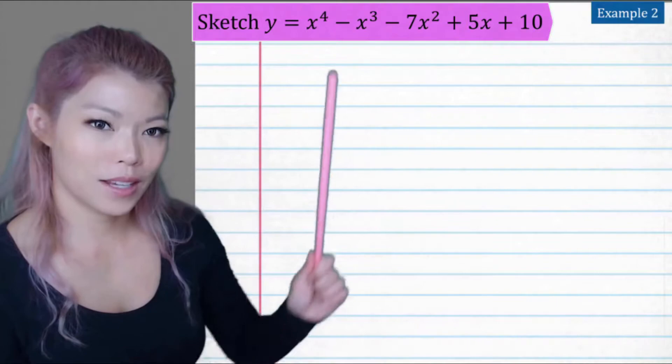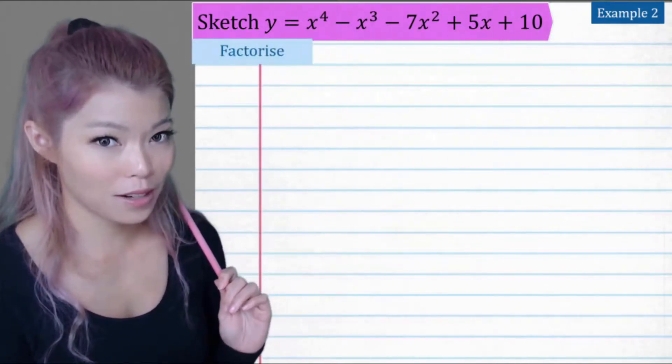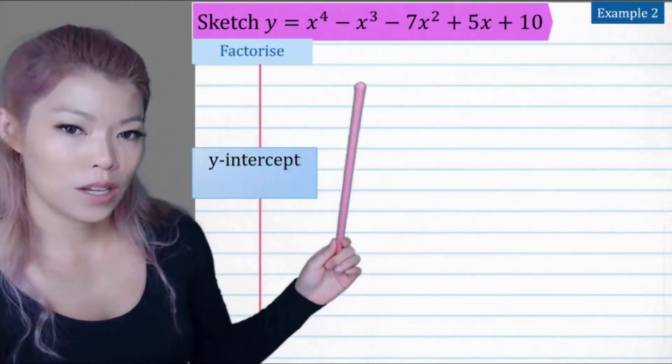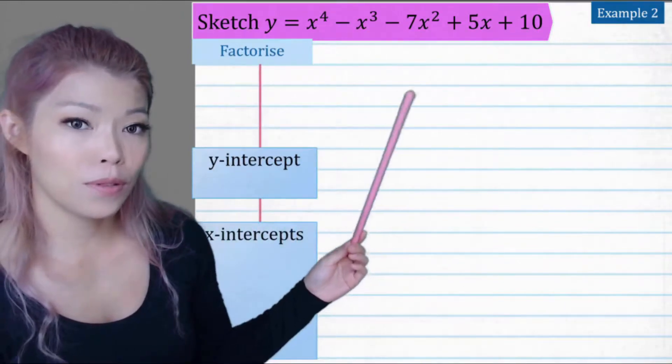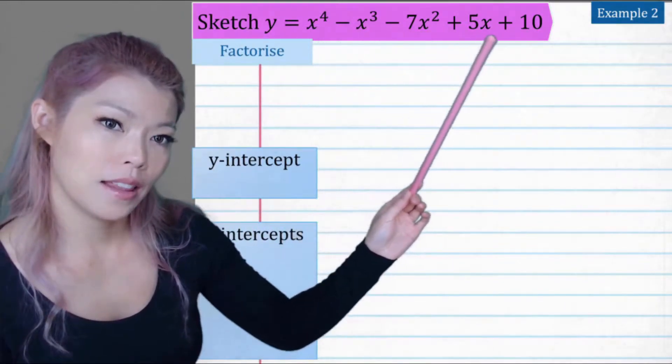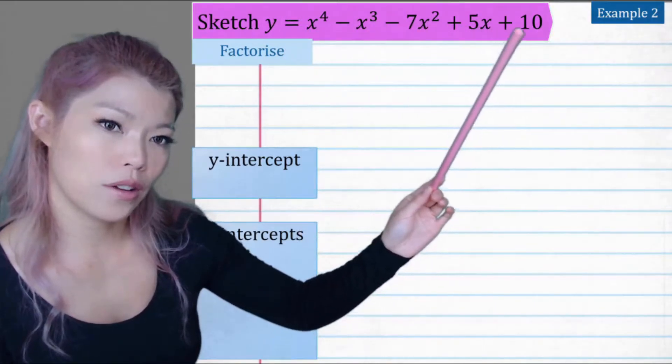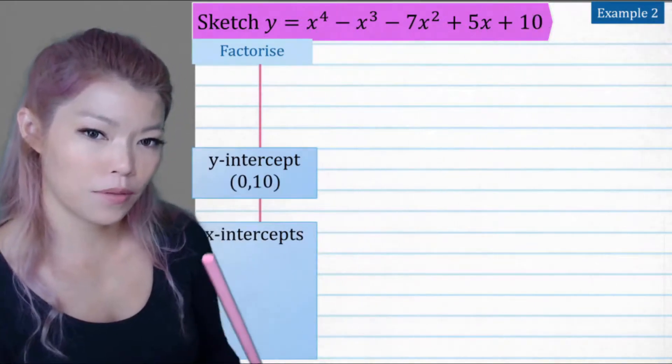Example 2. So here we have something that looks pretty scary. It's okay, we can factorize it. And then we can look at the y and x intercept. But before we factorize, we notice that the y intercept, when x equals 0, all that goes is just the last number over there, 10.